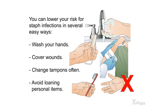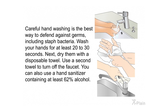Prevention. You can lower your risk for staph infections in several easy ways: wash your hands, cover wounds, change tampons often, and avoid loaning personal items. Careful hand washing is the best way to defend against germs, including staph bacteria. Wash your hands for at least 20 to 30 seconds, then dry them with a disposable towel and use a second towel to turn off the faucet. You can also use a hand sanitizer containing at least 62 percent alcohol.